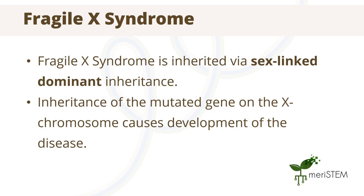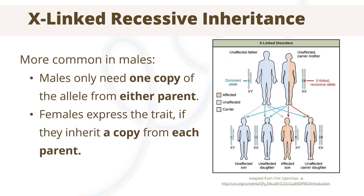Fragile X syndrome prevents the production of a specific protein needed for brain development. X-linked recessive conditions are more common in males. Males have a single X chromosome, and because of this, only a single recessive allele on the X chromosome can cause the development of the genetic disorder. Female offspring can also inherit the condition, but only if both parents carry a copy of the allele, causing the individual to inherit two copies of the recessive allele.